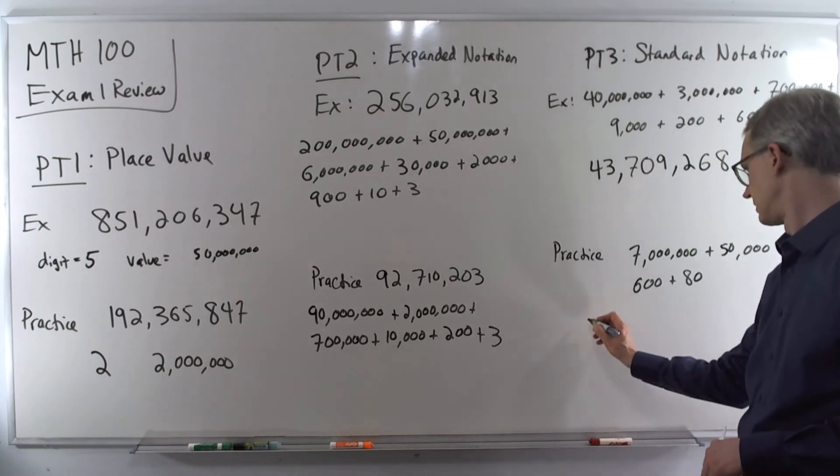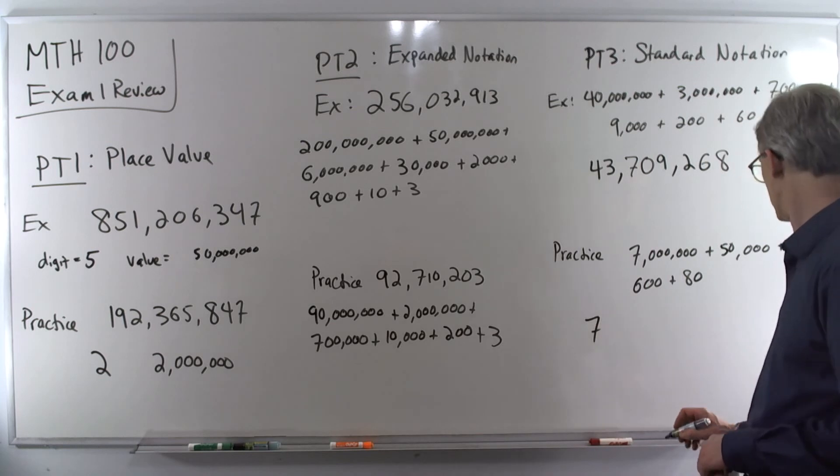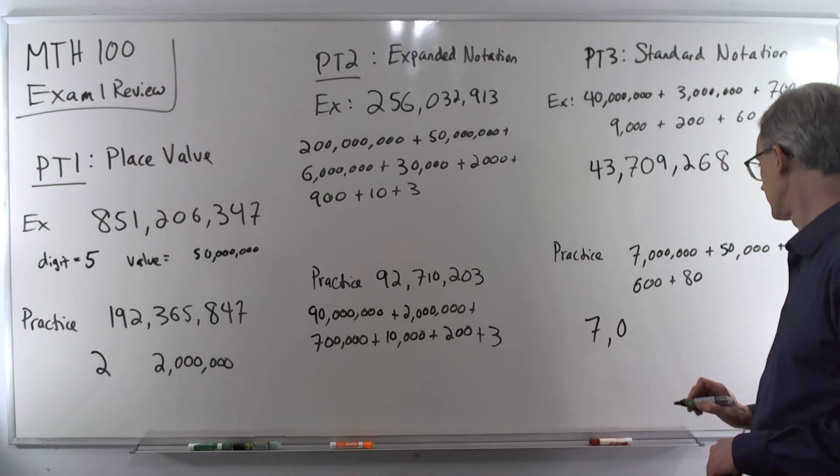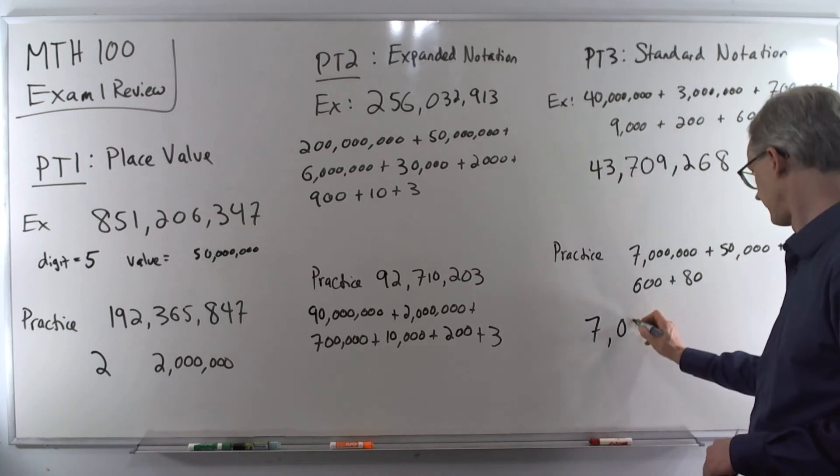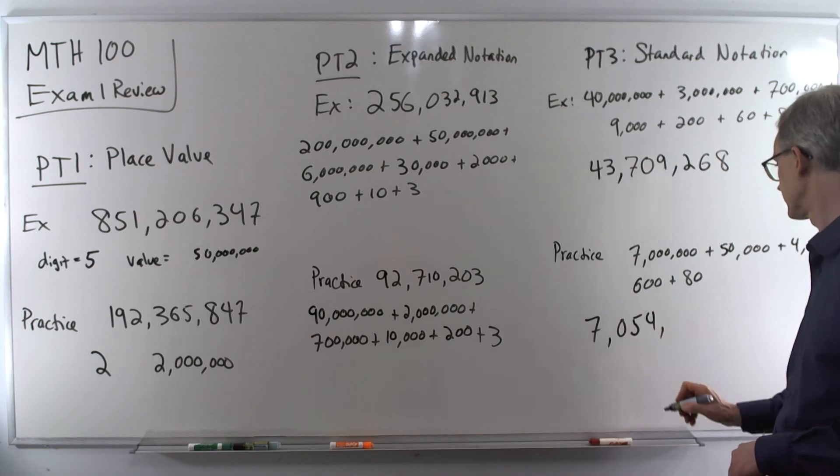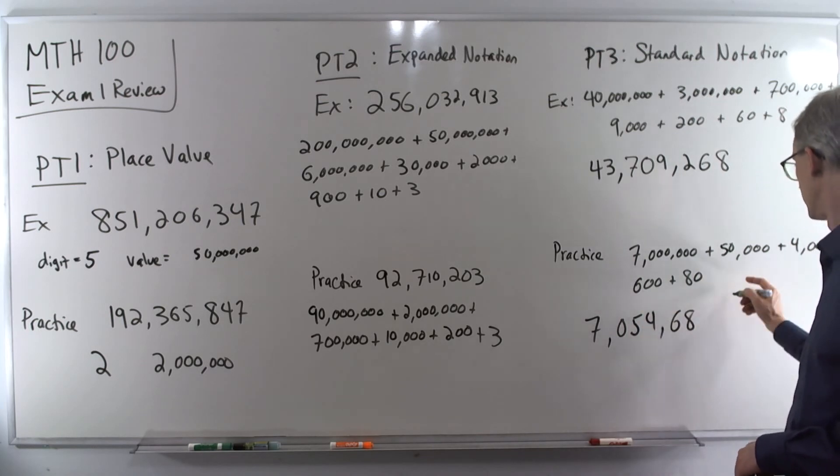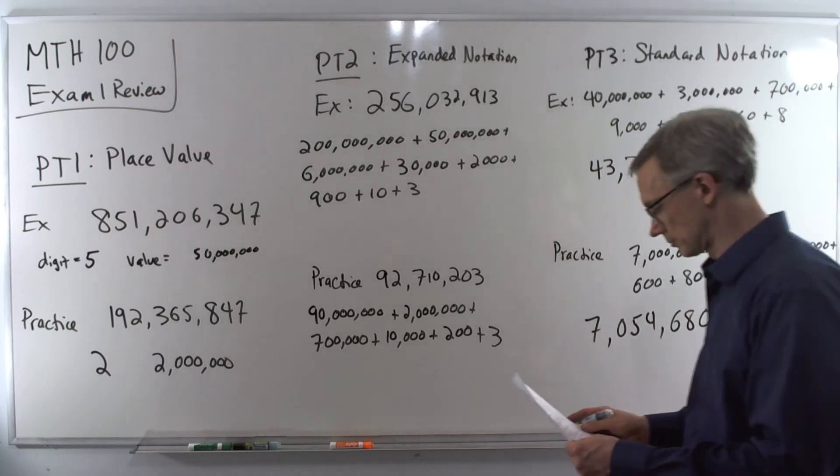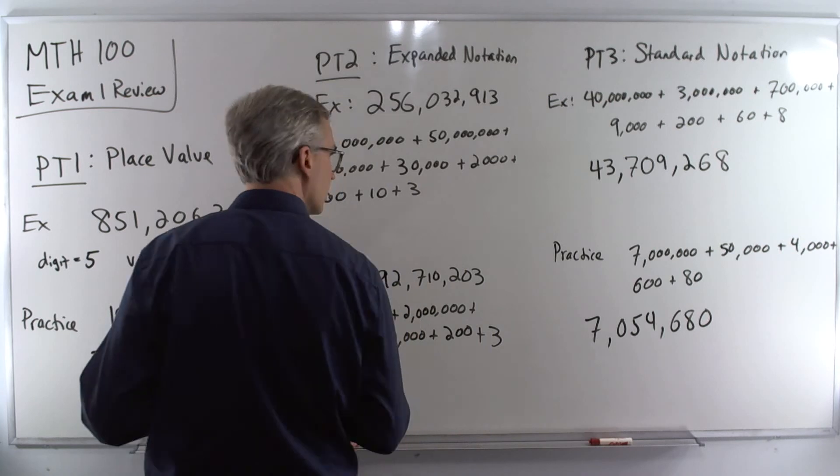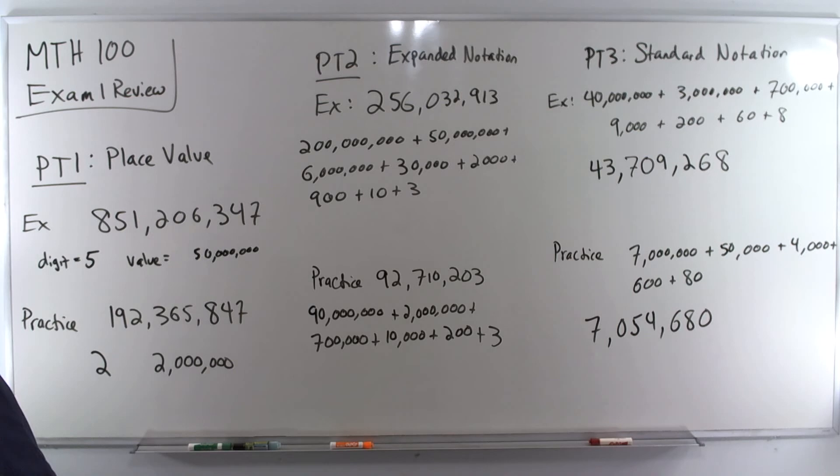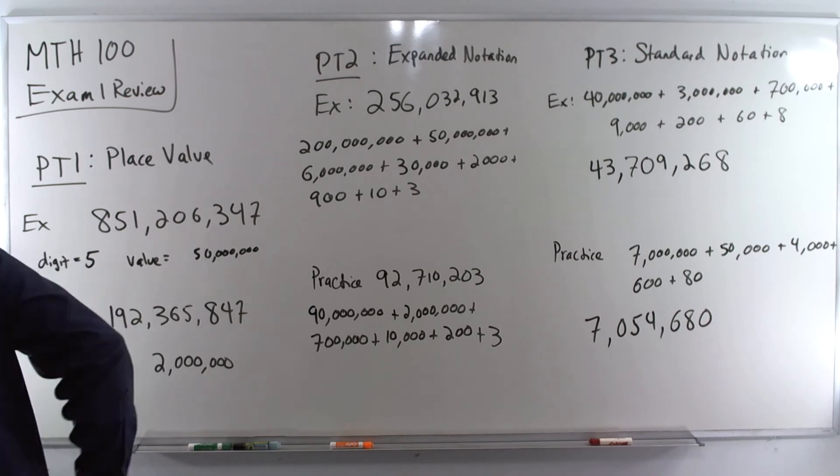Practice. 7 in the millions place. Nothing in the hundred thousands place. So put a zero there. 5 in the ten thousands place. And a 4 in the thousand place. 6 in the hundreds place. 8 in the tens place. And no singles. So a zero there.